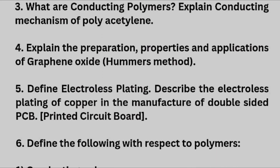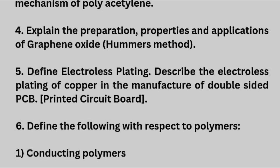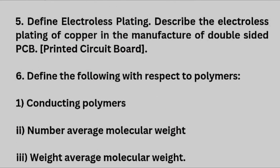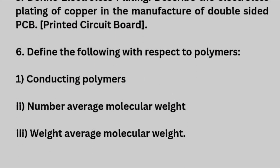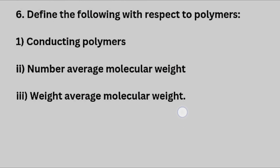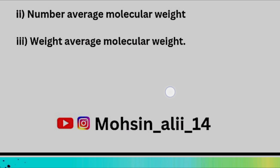Next we have: explain the preparation, properties, and applications of graphene oxide by Hummer's method. Define electroless plating — this is again an important 8-mark question — and describe the electroless plating of copper in the manufacture of double-sided PCB (Printed Circuit Board). Next, define the following with respect to polymers: conducting polymers, number average molecular weight, and weight average molecular weight. These are the six questions from Module 1 which you must surely cover.